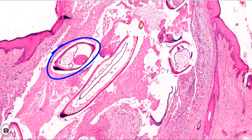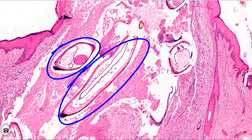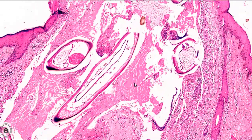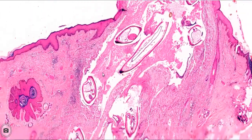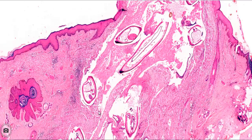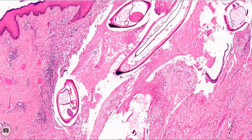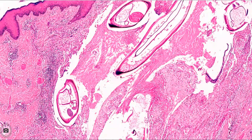Here we see inflammatory cells with fibrinous exudate occupying the cystic cavity, along with another worm cross section. In effect, we have a tangled mass of many worms lying in this cystic space under the epidermis in the subcutaneous tissue, surrounded by inflammatory infiltrate.